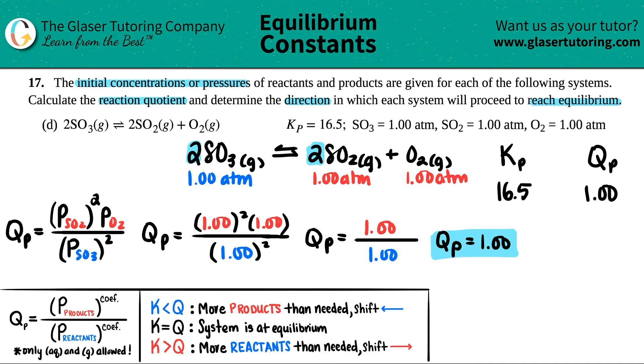And when that happens, this is what's going on: you have way more reactants than you need. So if you have way more of this, you will shift this way. You've got to use these up to get more products.